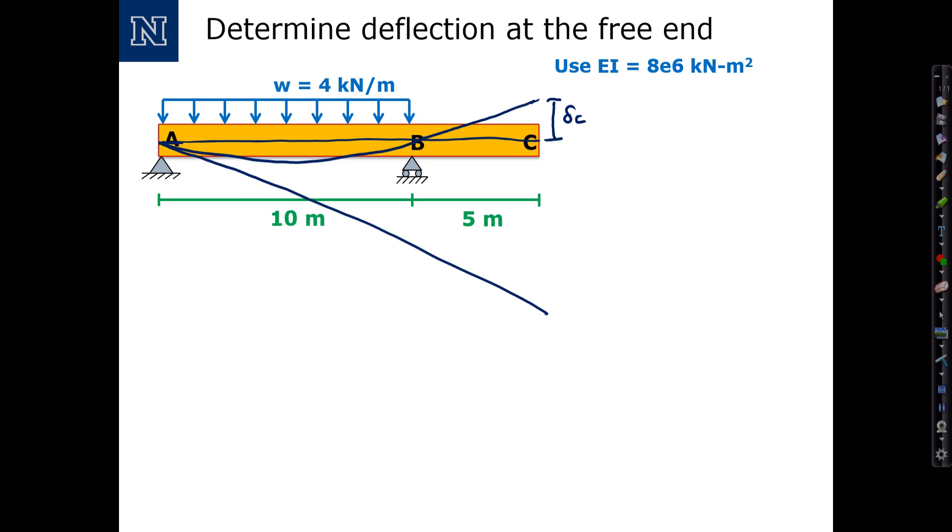My tangent line to the deflected curve at point A is going to look like this, quite exaggerated of course. And now I can label this distance here as T from C with respect to A.